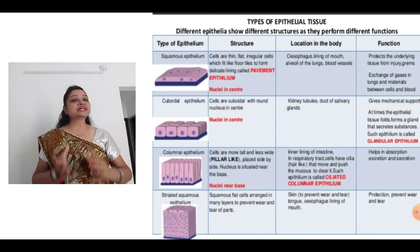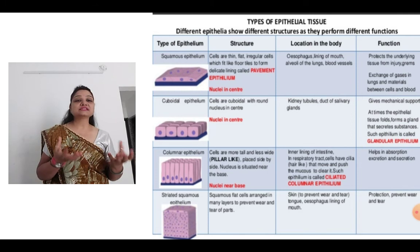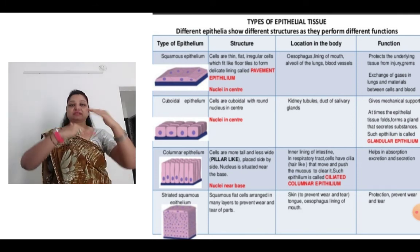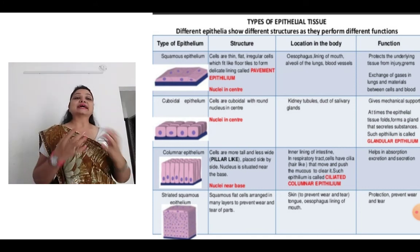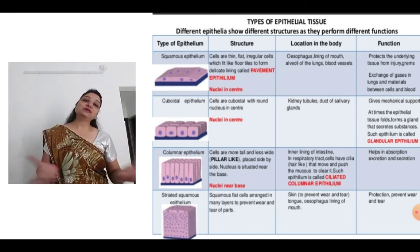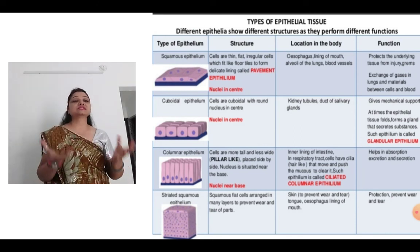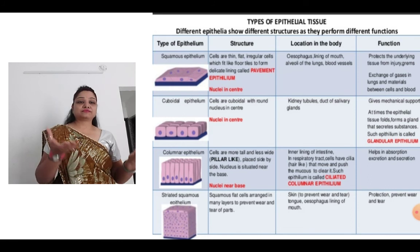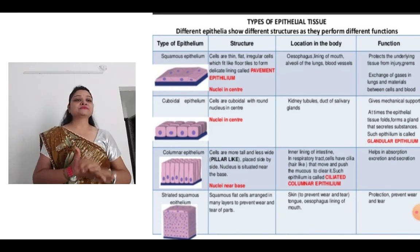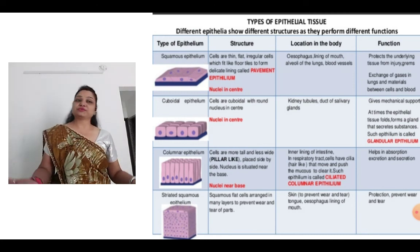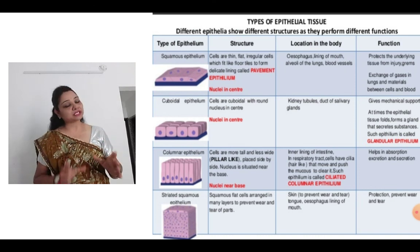The last one is the stratified squamous epithelium. Here flat squamous cells are arranged in many layers — that is why it is not simple but stratified. They prevent wear and tear of the parts. The location is the skin, tongue and esophagus lining. The function, again, is protection — it prevents wear and tear.